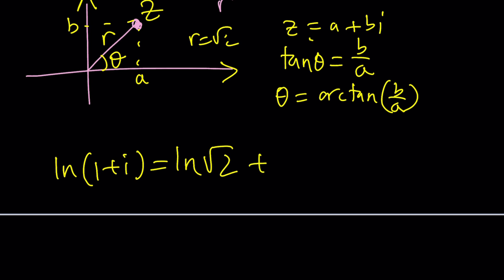So I'm going to write it as ln root 2, and then plus i times, of course, when you have 1 plus i, it's just going to make pi over 4 radians because it's 1 and root 2. You get the idea? It's an isosceles right triangle. Awesome.